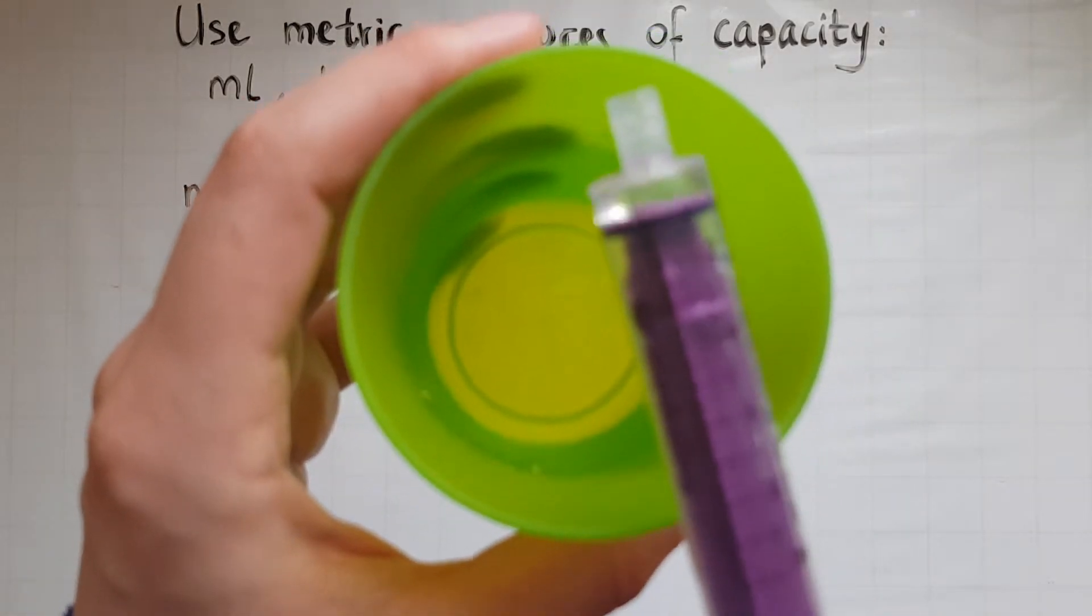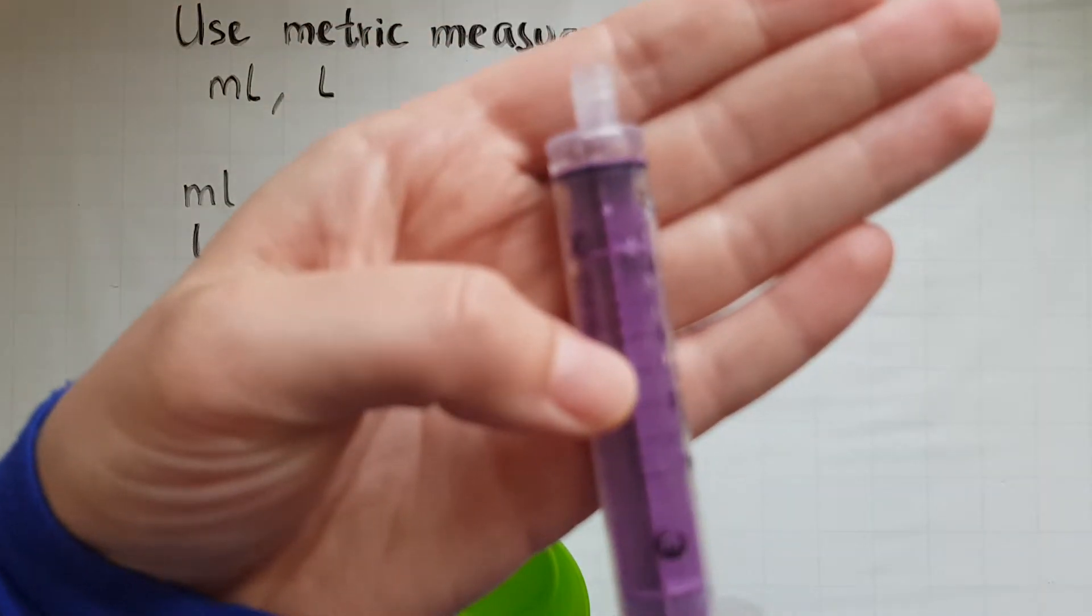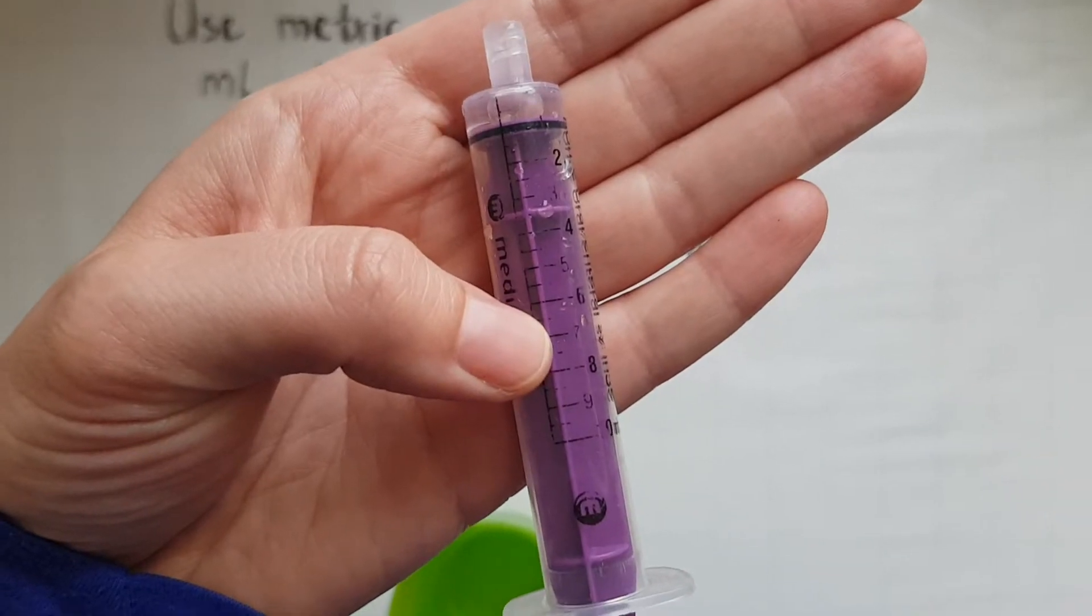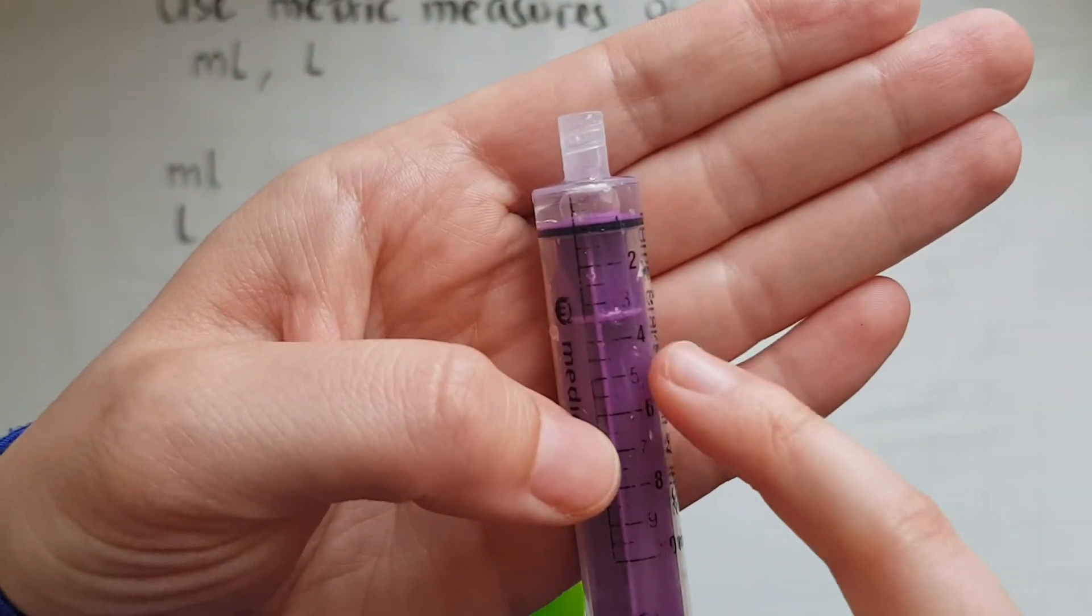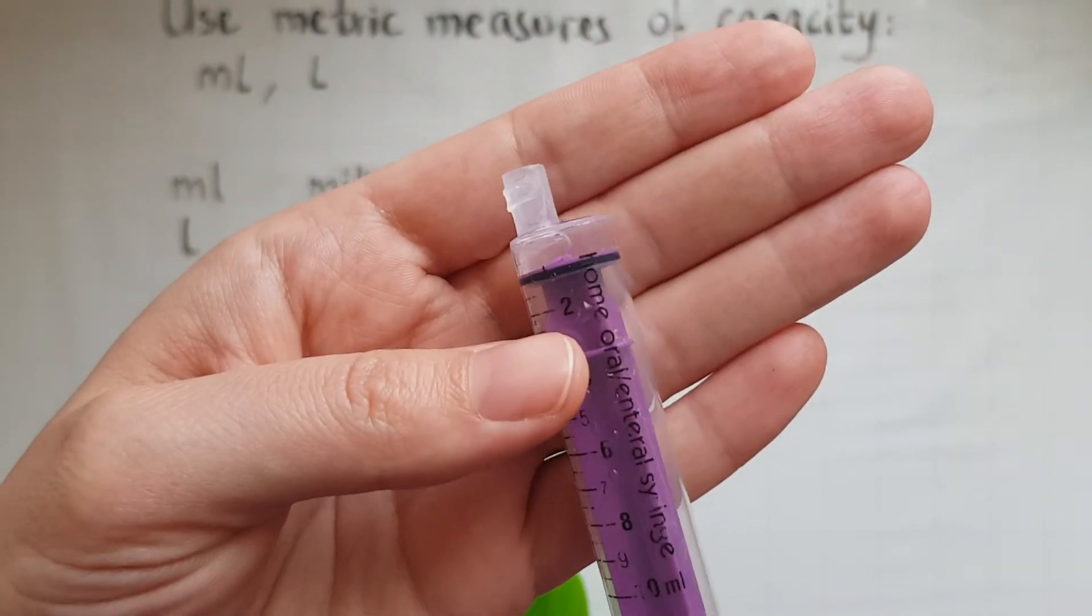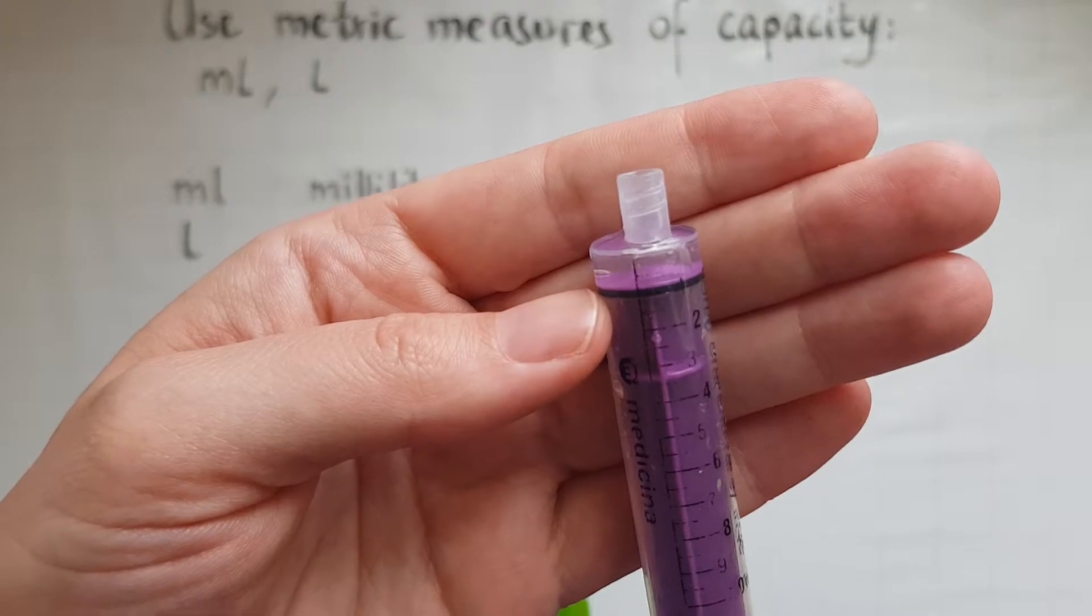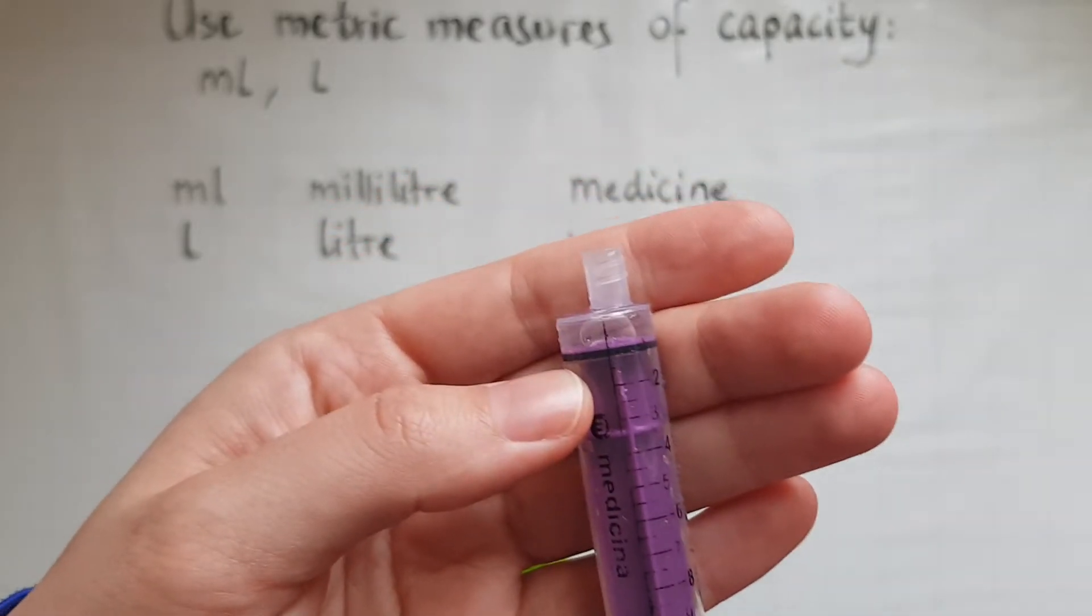So here is how much a milliliter is. There we have one, two, three, four, five milliliters. So you administer medicine with this and that is how much a milliliter. So it's a really small amount.